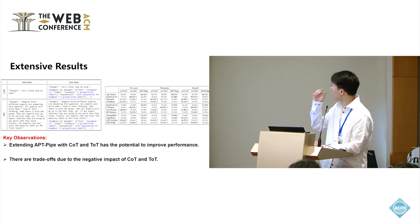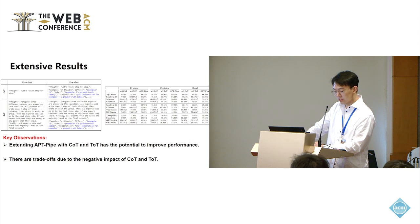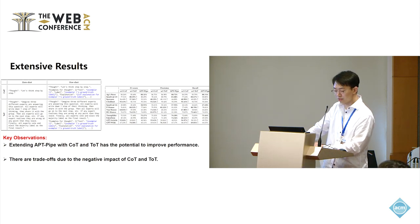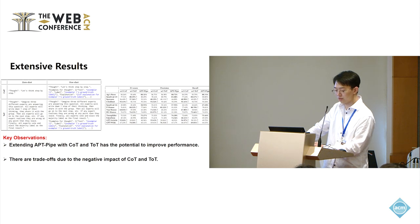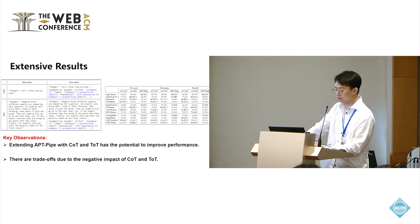We also highlight the capability of APTPipe as an extensible framework for additional prompt tuning techniques. For example, in the extension results we extend APTPipe with CoT (chain of thought) and ToT (tree of thought) prompt tuning methods. We find that extending APTPipe with CoT and ToT has the potential to improve performance on 8 out of 12 datasets. However, there are trade-offs due to the negative impact of CoT and ToT causing misleading logic on other datasets.